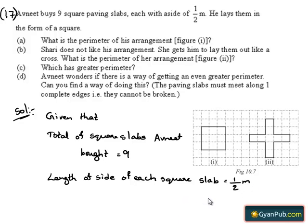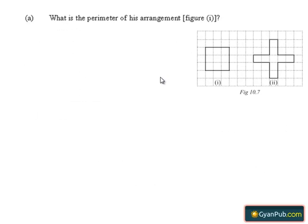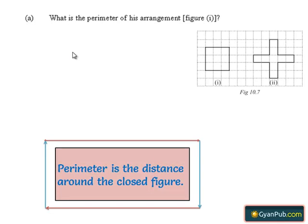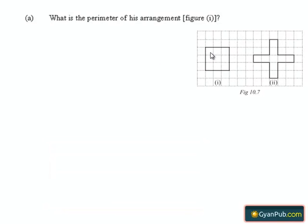Now consider the first part. We have to find the perimeter of his arrangement in figure 1. We know that perimeter is the distance covered along the boundary forming a closed figure when you go around the figure once. In order to find the perimeter of this arrangement, we first count the number of sides of slabs used in the boundary of the square.